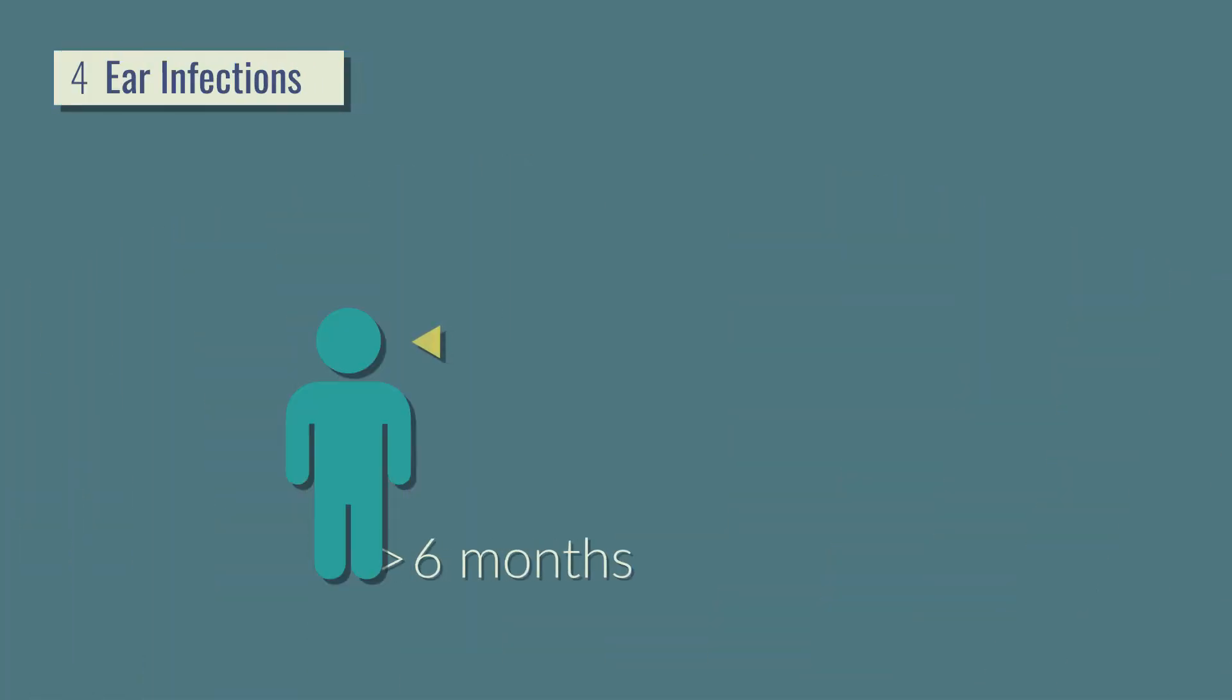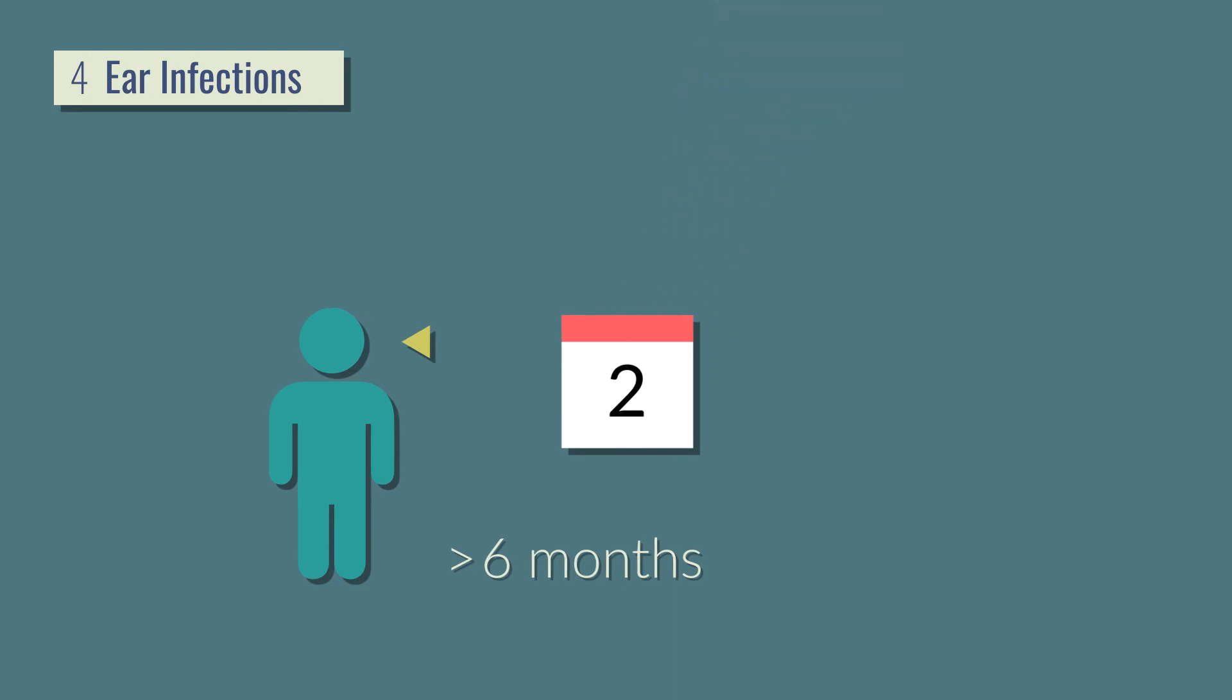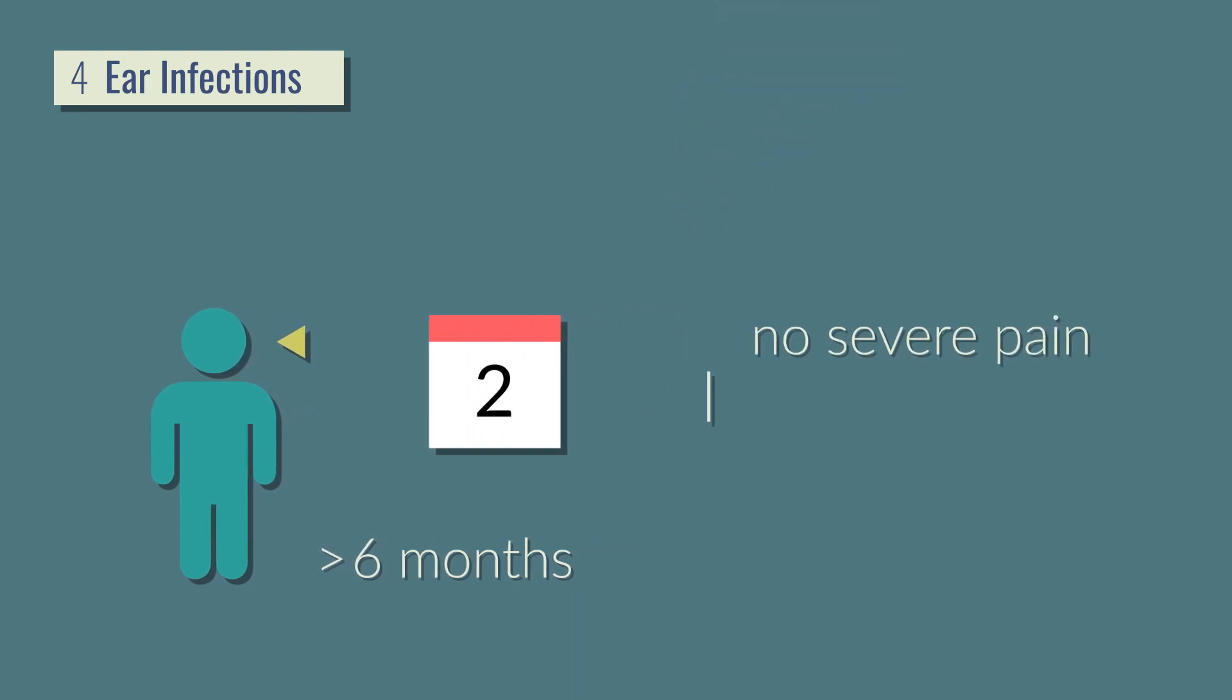Fourth, for acute ear infections in healthy kids over six months, you can wait up to two days before starting antibiotics, as long as they don't have severe pain or irritability and have a fever below 39 degrees Celsius. Most get better without antibiotics.